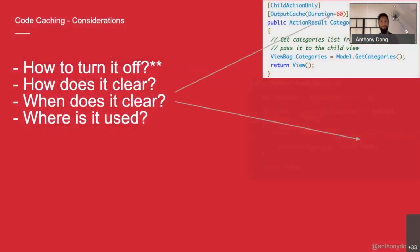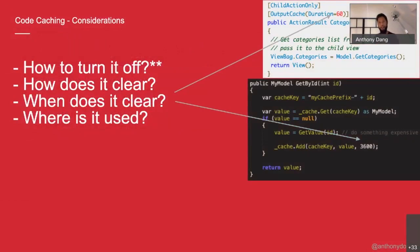Being able to turn off cache is as important as having the cache in the first place — I cannot stress this enough. At some point you're going to have stale content, a weird performance problem, or an intermittent problem, and you'll want to turn off the cache in that part of your code to investigate. Another issue: how does it clear? You could clear a CDN by going into the portal manually, but if you've cached in memory, you need to write code to do this.